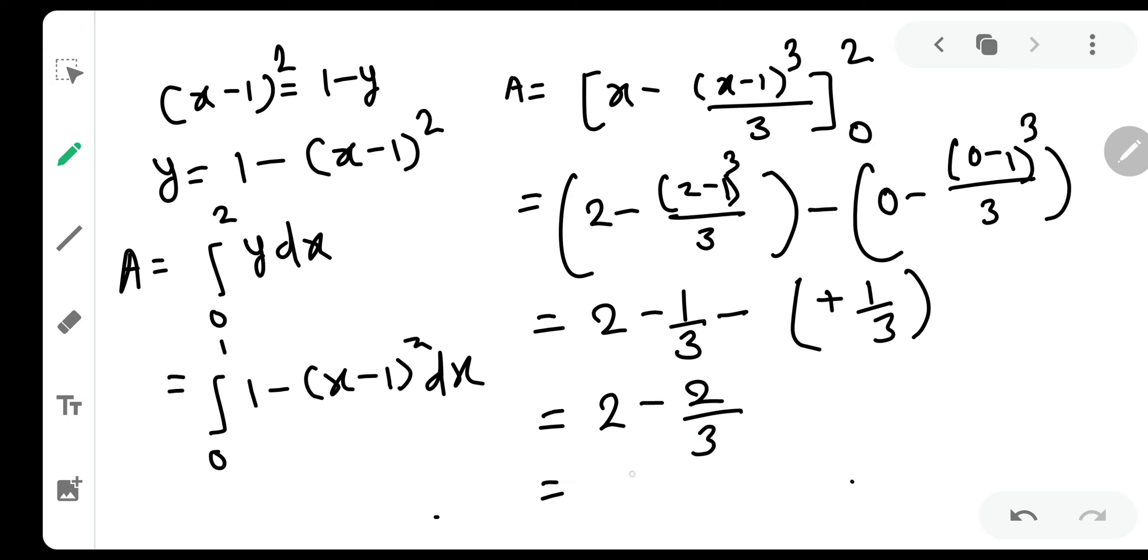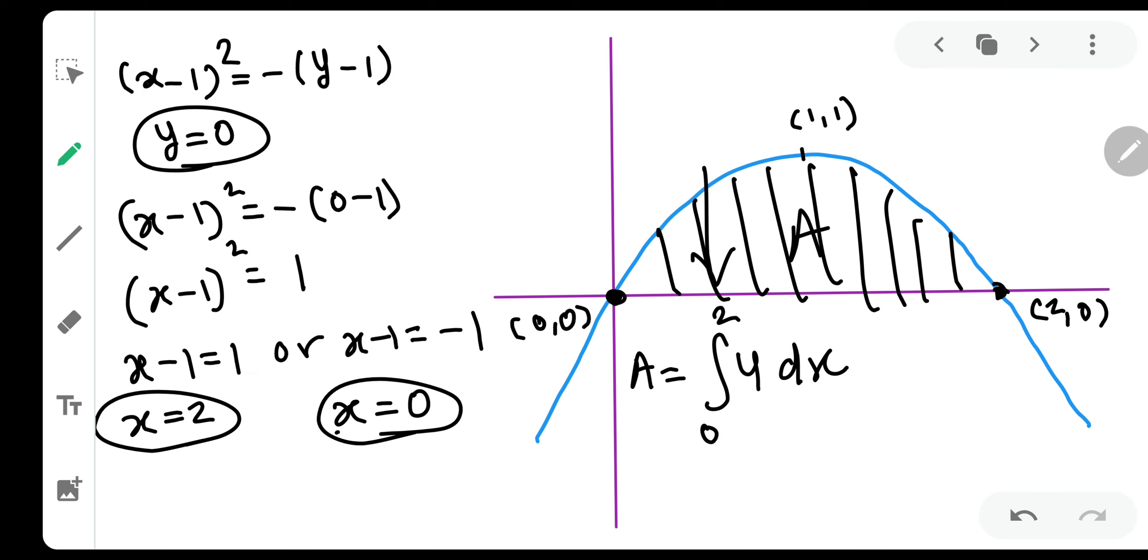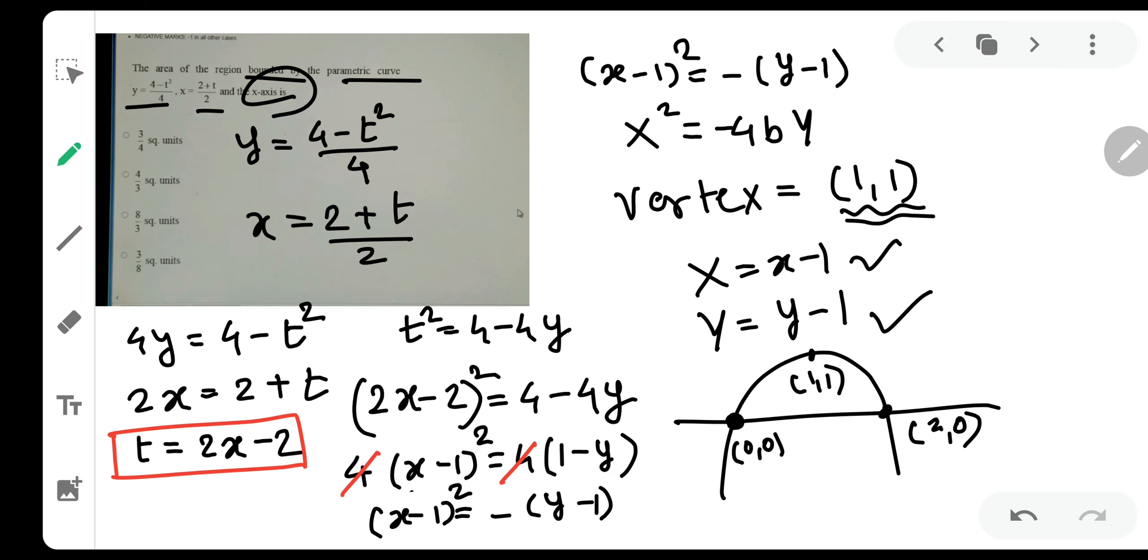Which is nothing but 2, 3 is 6. 6 minus 2 is 4. 4 by 3 square units. So the correct answer to this question as we can see is just 4 by 3 square units. Which is option B.